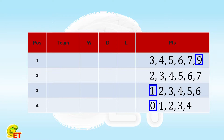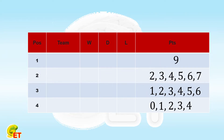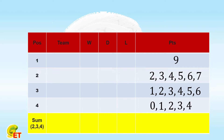Since the first team wins all their games, we can skip them entirely and only consider the 3 games among the other 3 teams. Different point distributions can give the same total points, but different total points must lead to different point distributions. Therefore, we can group the possibilities into 4 classes according to the total points yielded in these 3 games.